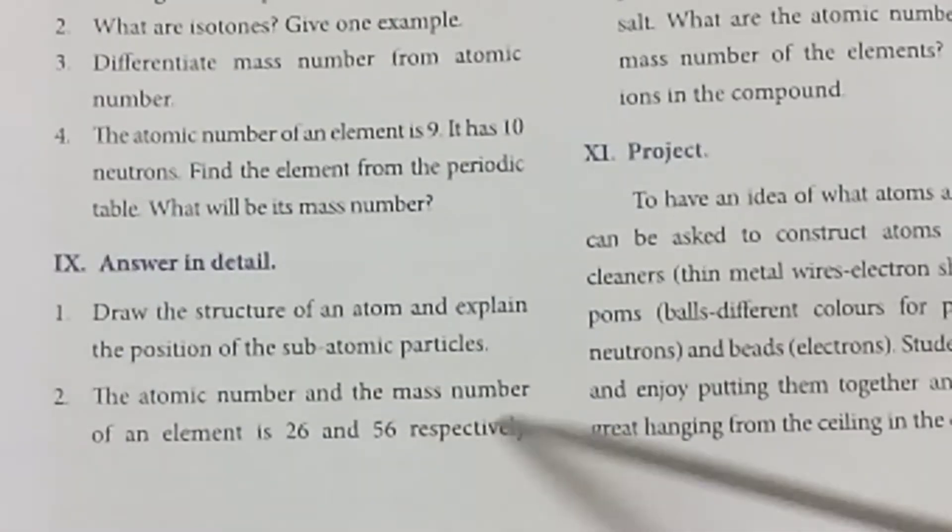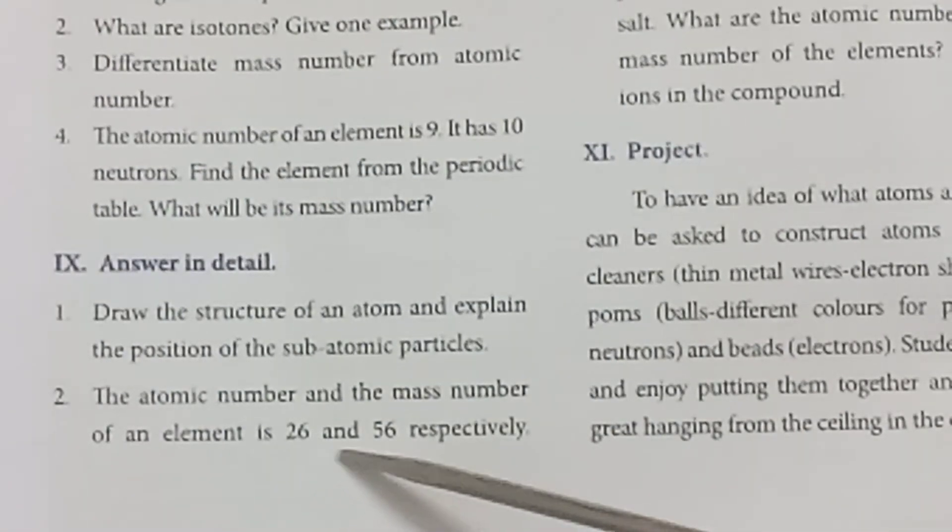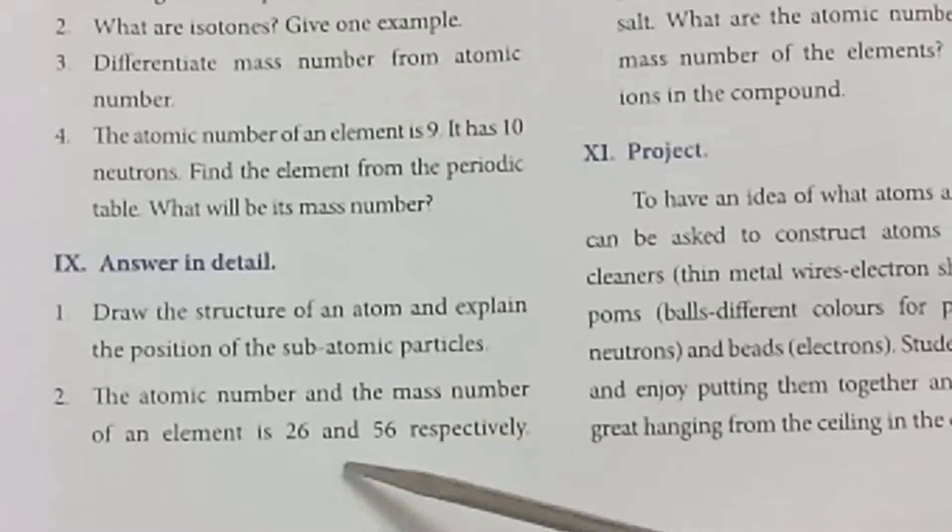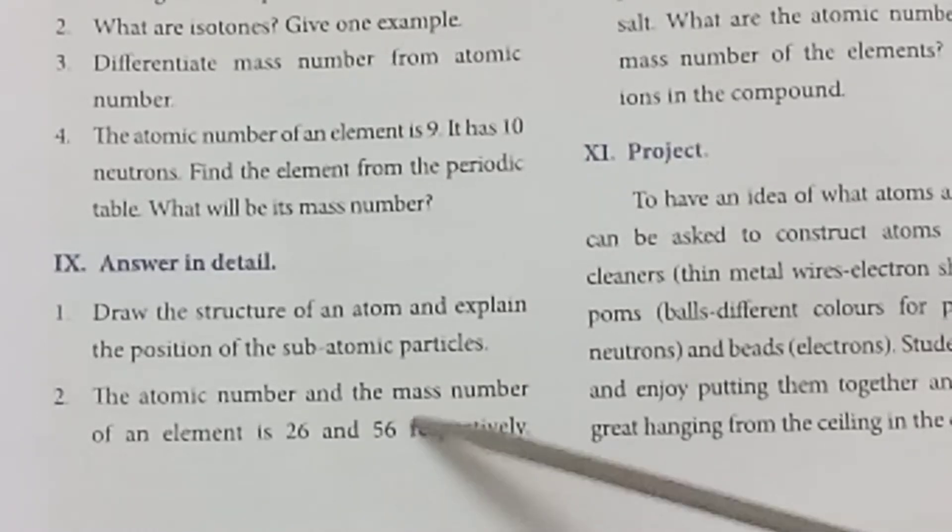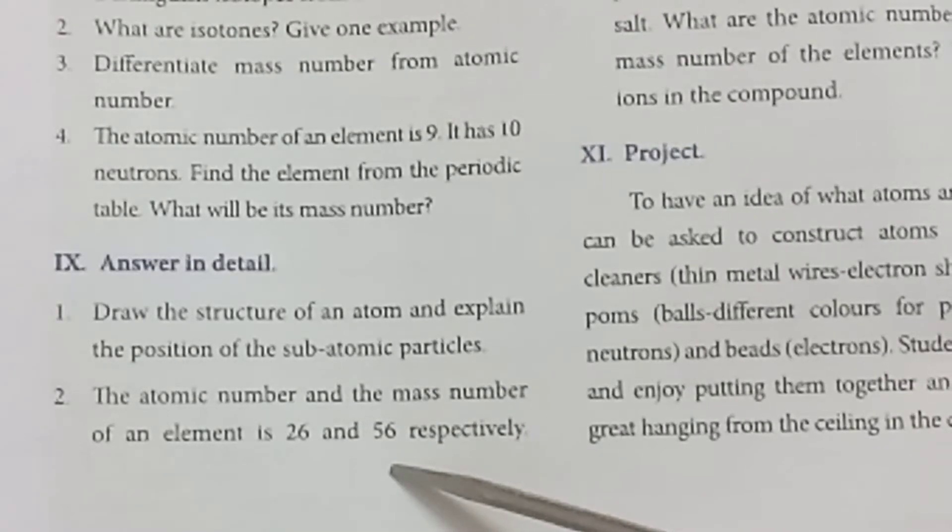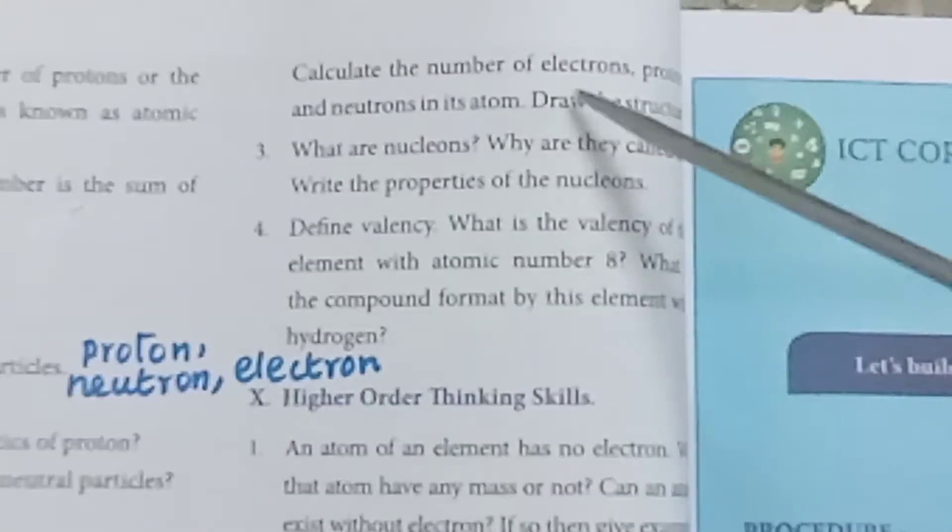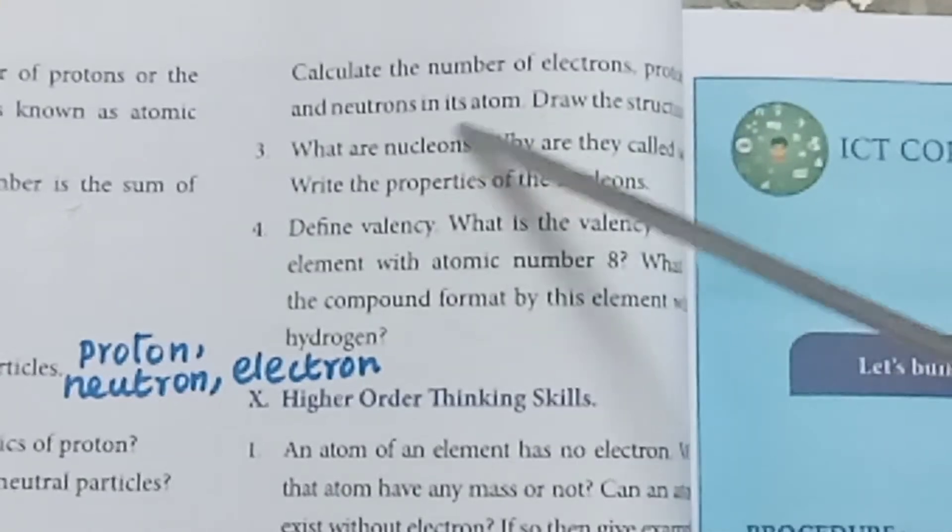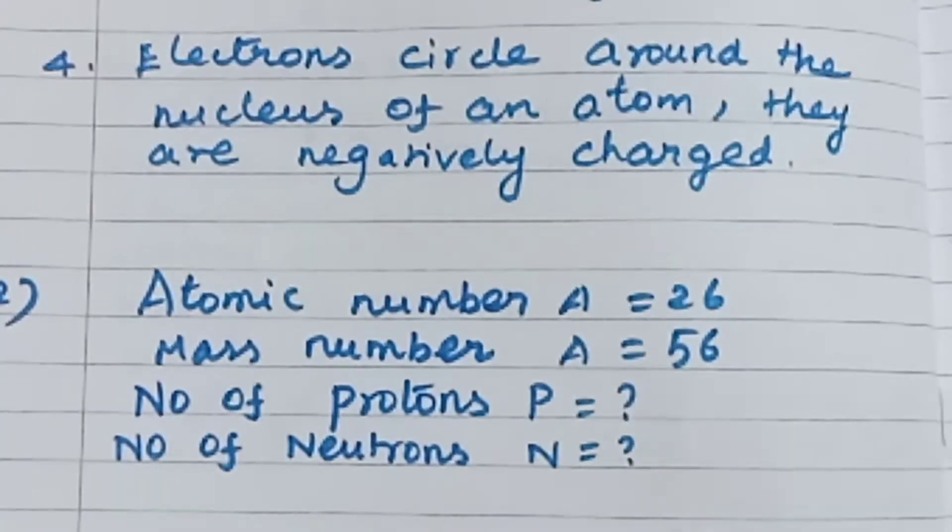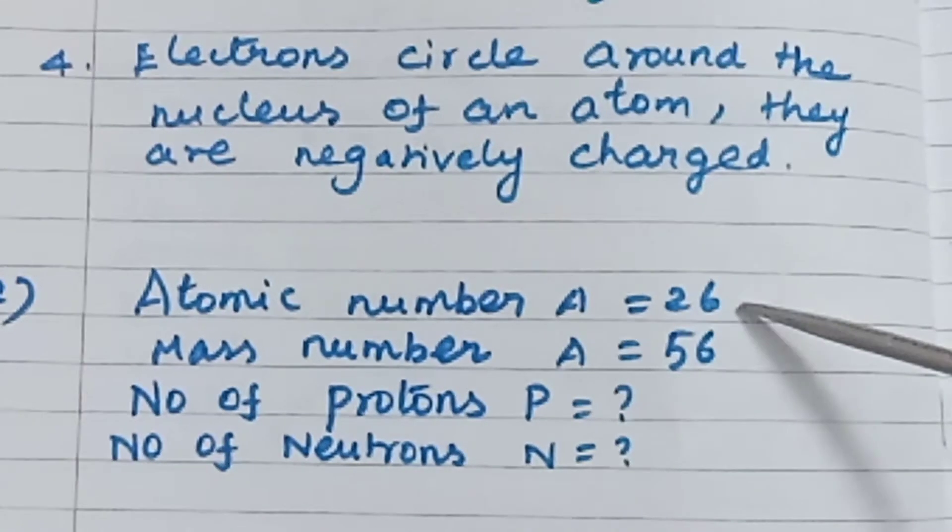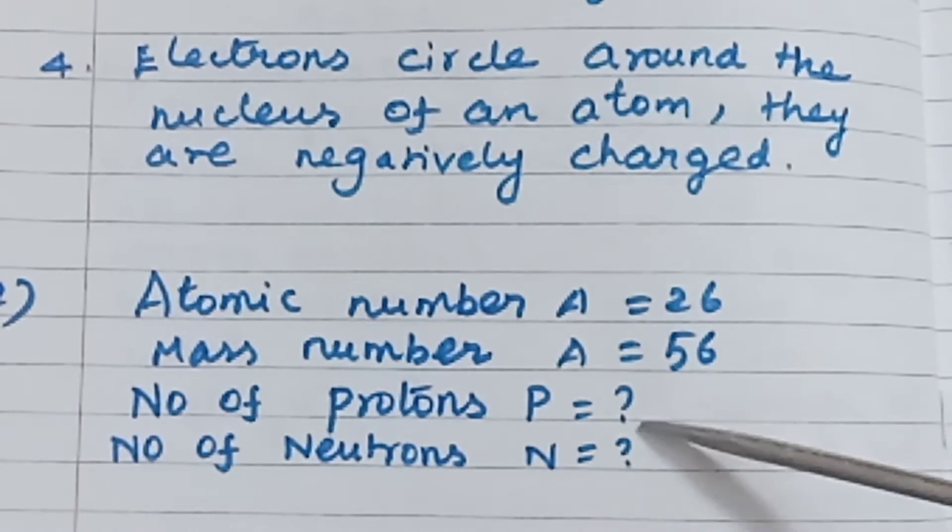The atomic number and the mass number of an element is 26 and 56 respectively. Calculate the number of electrons, protons and neutrons in its atom and draw the structure. Atomic number A equals 26, mass number 56.